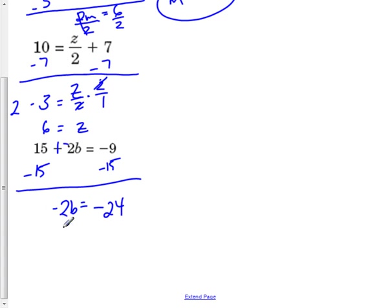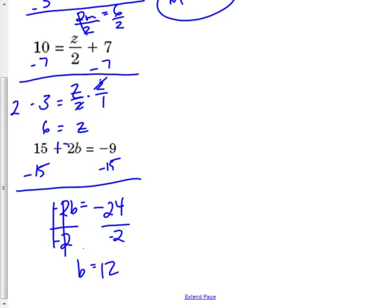Now I need to get rid of the coefficient, and the coefficient's negative, so go ahead and divide by negative 2 on both sides. The negatives will cancel, the 2s will cancel, and I'm left with b. It is a negative divided by a negative, so that's a positive. 24 divided by 2 is 12, so positive 12 is my answer. If I were to check that: 12 times negative 2 is negative 24, and 15 plus negative 24 would give us negative 9, so that works.